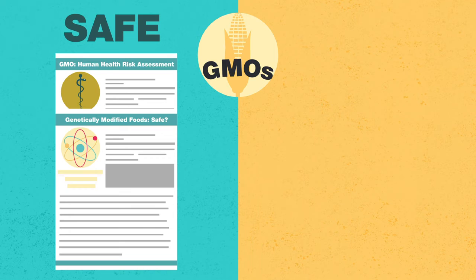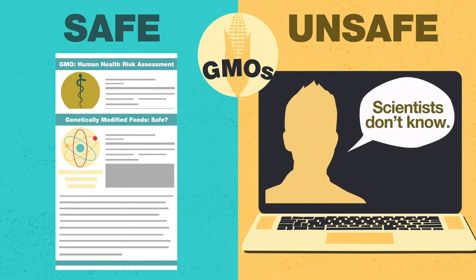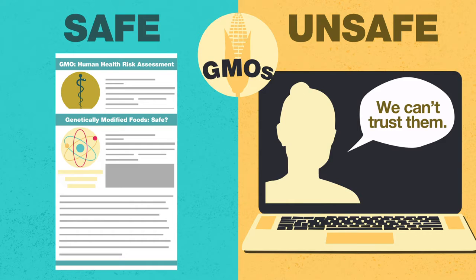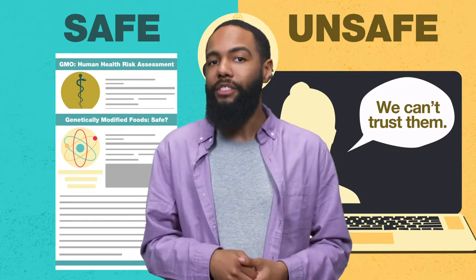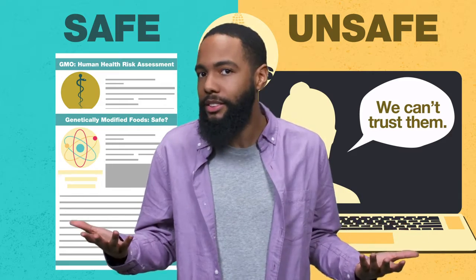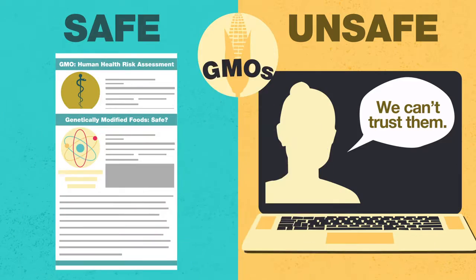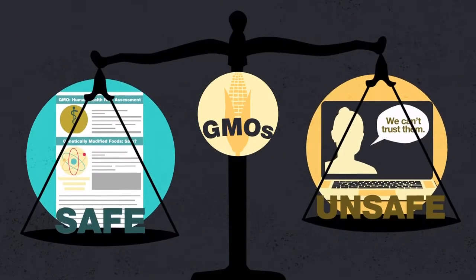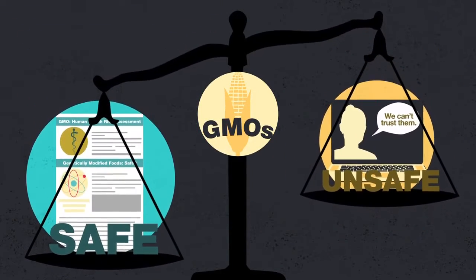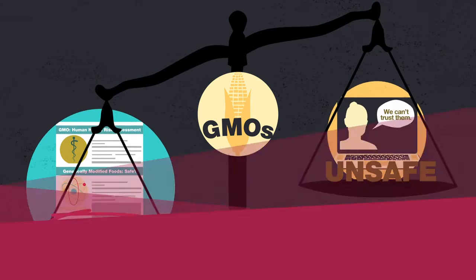Take genetically modified foods, or GMOs. The science is pretty clear: GMO foods aren't harmful to your health. This has been validated in peer-reviewed journals. Yet you often find articles and news segments where non-experts and interest groups question the safety of GMOs, and presenting both of these views as equally valid is actually illogical — a false equivalence. These two sides don't deserve equal time in a news story. One is based on scientific consensus and the other is based on vague speculation by interest groups and non-experts.